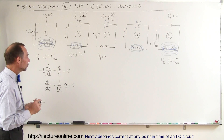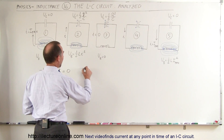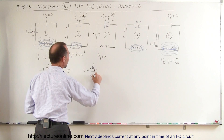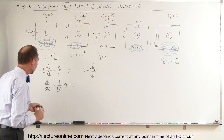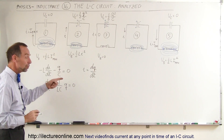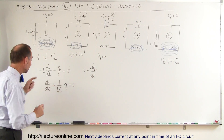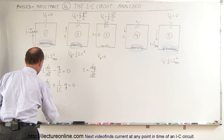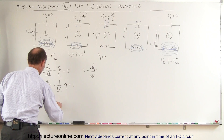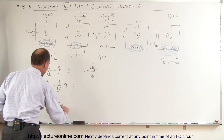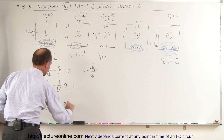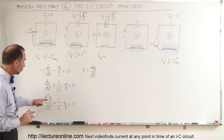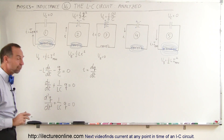Now we realize that i is equal to dq/dt — it's the change in charge per unit time. Therefore we can replace i by dq/dt, so the first derivative becomes the second derivative, giving us d²q/dt² plus 1 over LC times Q equals zero. We now have a second-order differential equation in the variable Q.